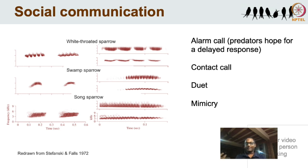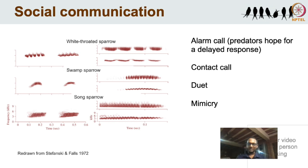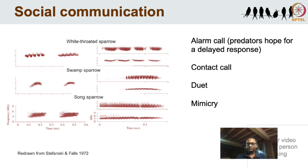Mimicry is also used for something called kleptoparasitism — to steal food. If there's a bird with a nice juicy caterpillar, the mimicry bird can mimic the sound of a predator; the bird with the caterpillar drops it and flies away, and the mimicry bird swoops in and catches it. Mimicry is also thought to be used to attract females.